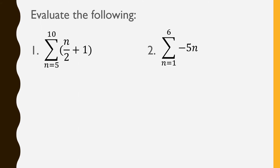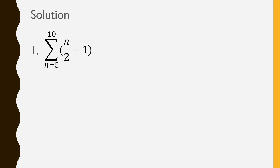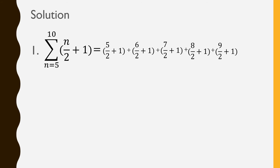Now let's evaluate summation notations with fractions and negative values. The first one is the sum of n over 2 plus 1 as n goes from 5 to 10. The starting point this time is not 1 — it starts at 5 and ends at 10. So we have: 5 over 2 plus 1, then 6 over 2 plus 1, then 7 over 2 plus 1, then 8 over 2 plus 1, then 9 over 2 plus 1, and lastly 10 over 2 plus 1, since 10 is our stopping point.